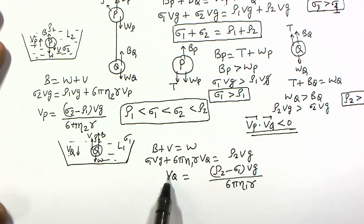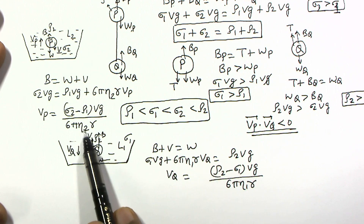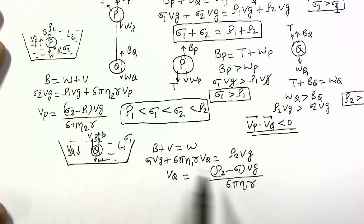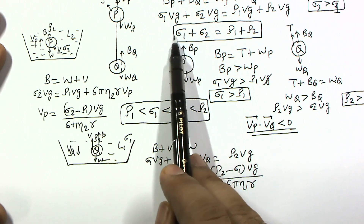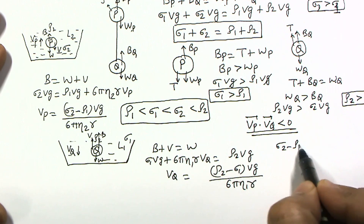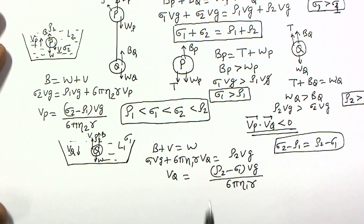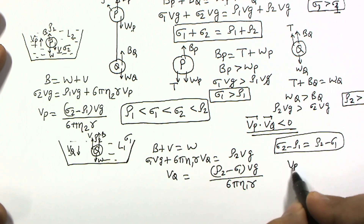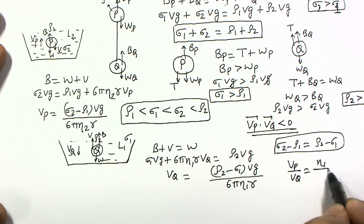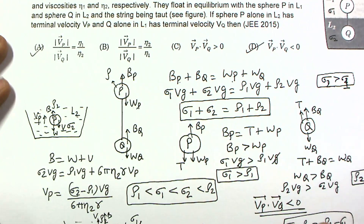Taking the ratio VP/VQ using magnitudes: VP/VQ = [(σ2 − ρ1)·V·g / (6π·η2·r)] / [(ρ2 − σ1)·V·g / (6π·η1·r)] = η1/η2 × (σ2 − ρ1)/(ρ2 − σ1). From our rearranged equilibrium equation σ1 + σ2 = ρ1 + ρ2, we get σ2 − ρ1 = ρ2 − σ1, so these factors cancel. Therefore VP/VQ = η1/η2. This matches option A, and with the direction analysis, options A and D are both correct answers.